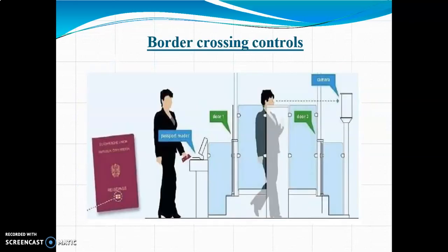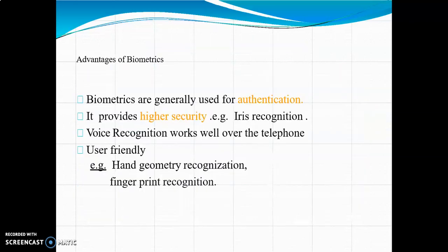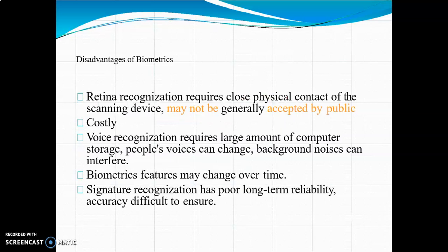This is an example of border crossing controls. Among the advantages of biometrics: they are generally used for authentication, providing higher security — for example, iris recognition. Voice recognition works well over the telephone, and it is user-friendly, for example hand geometry recognition and fingerprint recognition.